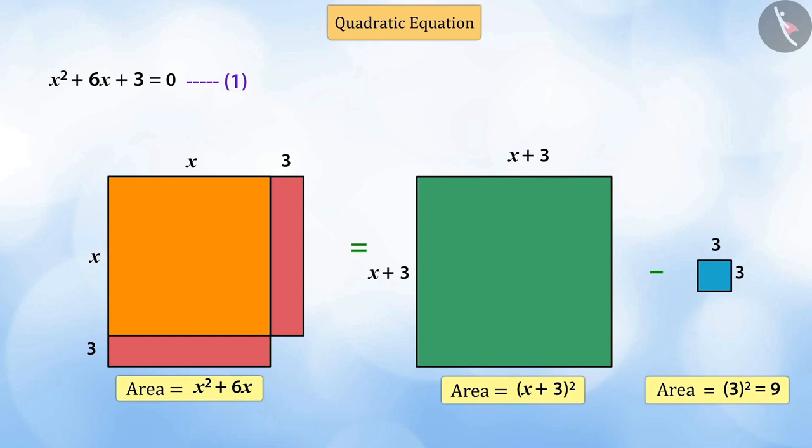Thus, the expression x square plus 6x can be written as x plus 3, the whole square, minus 9.